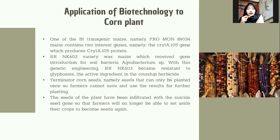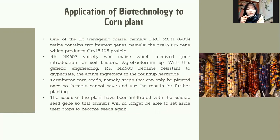One of the Bt transgenic maize varieties is MON 89034. This maize contains two interest genes, namely the cry1A105 gene which produces cry1A105 protein. The RR NK603 variety receives gene introduction from the cyanobacterium Agrobacterium sp. With this genetic engineering, RR NK603 became resistant to glyphosate, the active ingredient in the Roundup herbicide.